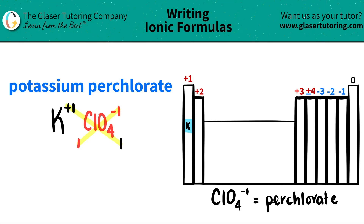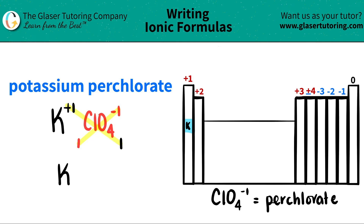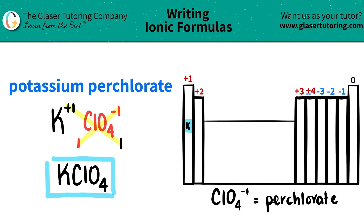Now I'm ready to write my formula. So I have potassium — I only need one of them, so I don't have to write that. And then since I only have one of my polyatomic ClO4, I don't need parentheses. So I can just write ClO4. And that's it — easy as that. So potassium perchlorate is just KClO4.